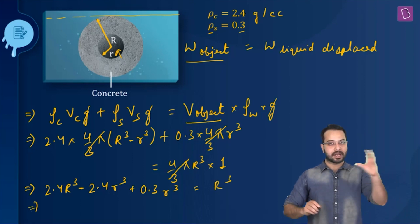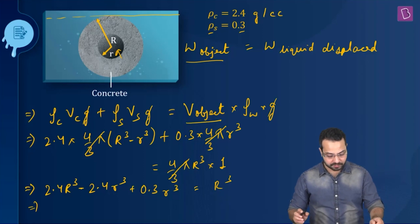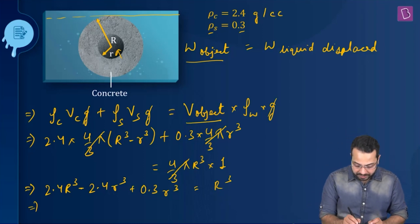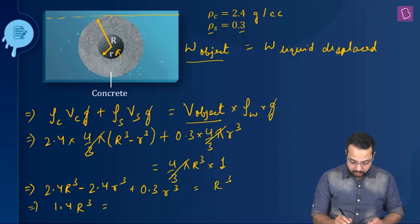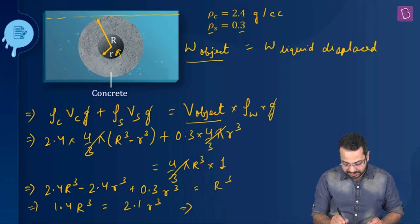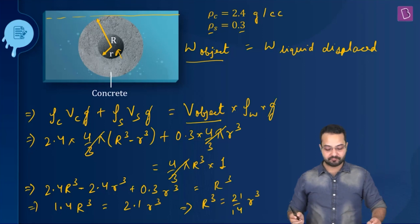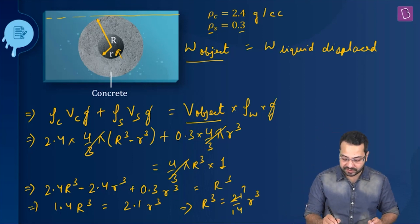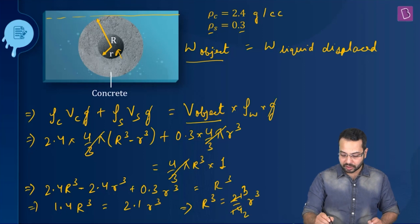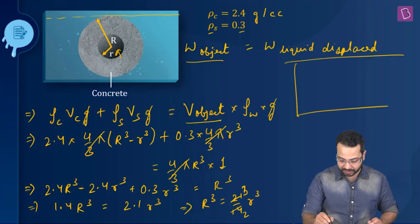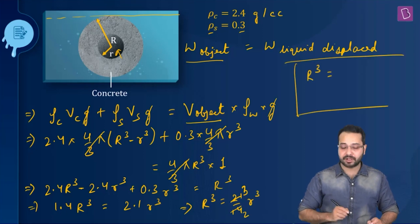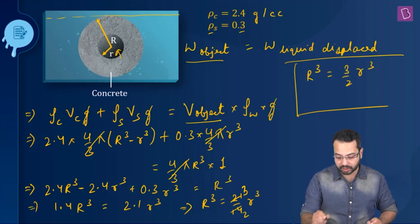Taking all capital R terms to one side and small r terms to the other: 2.4R³ − 2.4r³ + 0.3r³ = R³, which gives 1.4R³ = 2.1r³ wait — rearranging: 2.4R³ − R³ = 2.4r³ − 0.3r³, so 1.4R³ = 2.1r³. Hence R³ = (21/14)r³ = (3/2)r³. That is the relationship we have found.